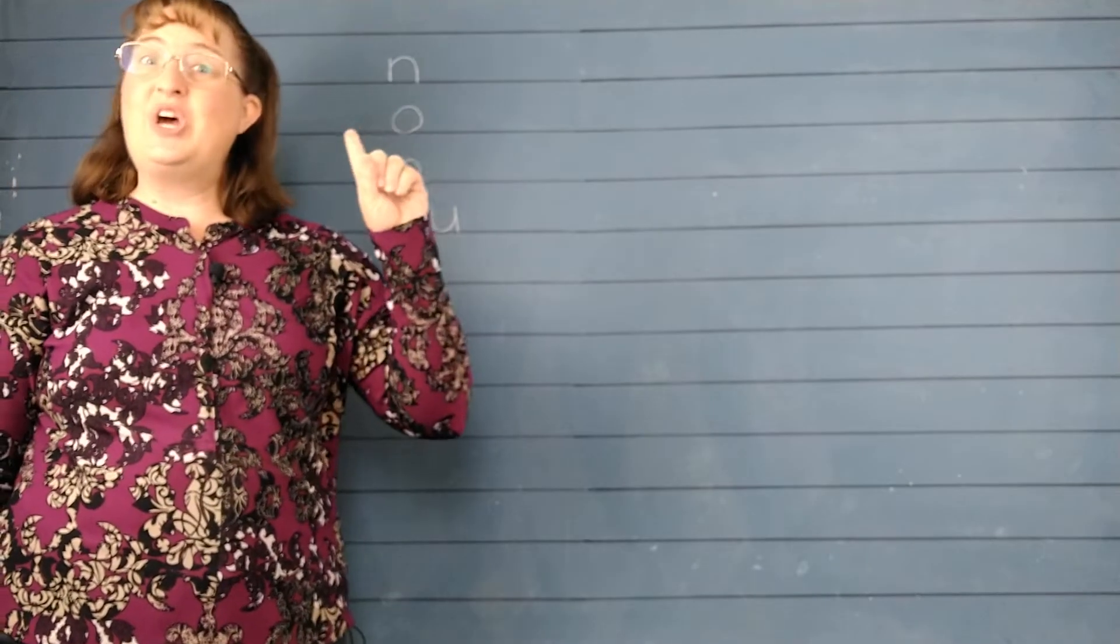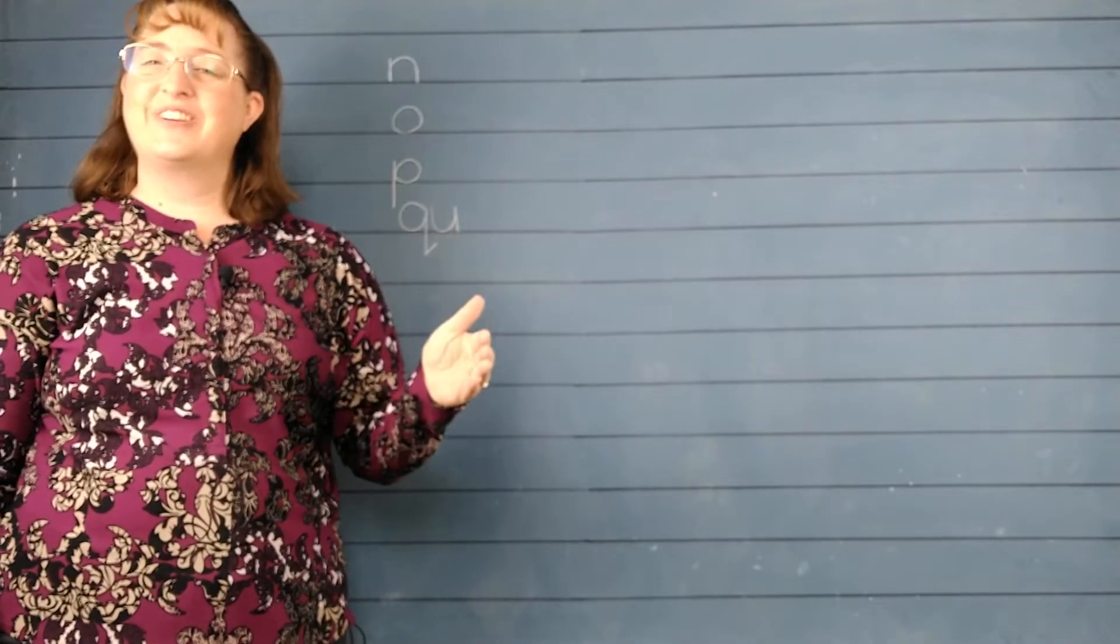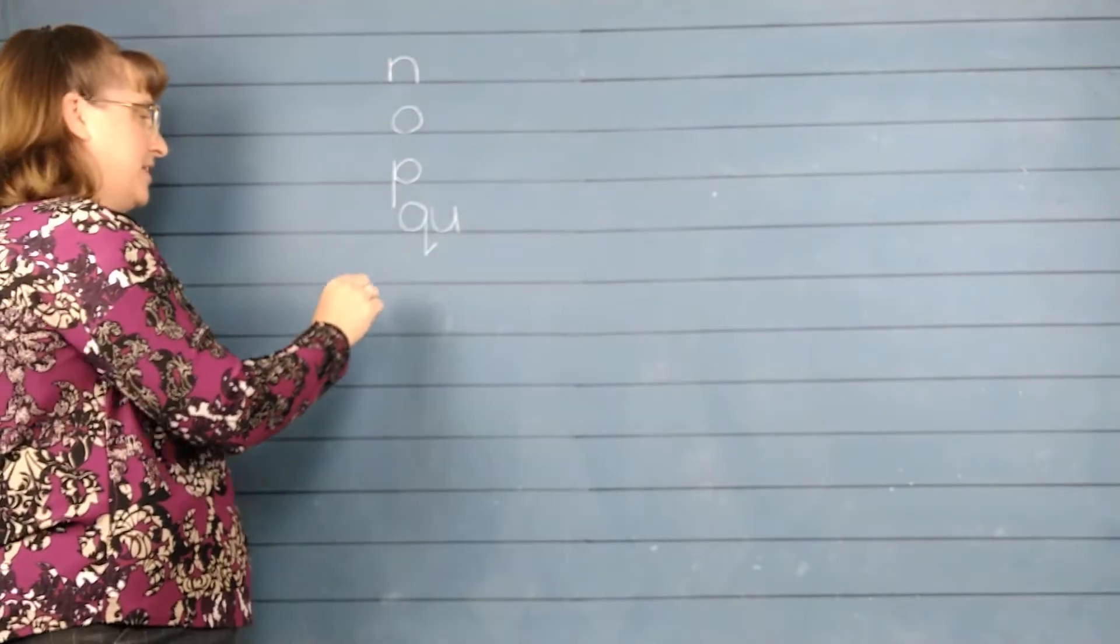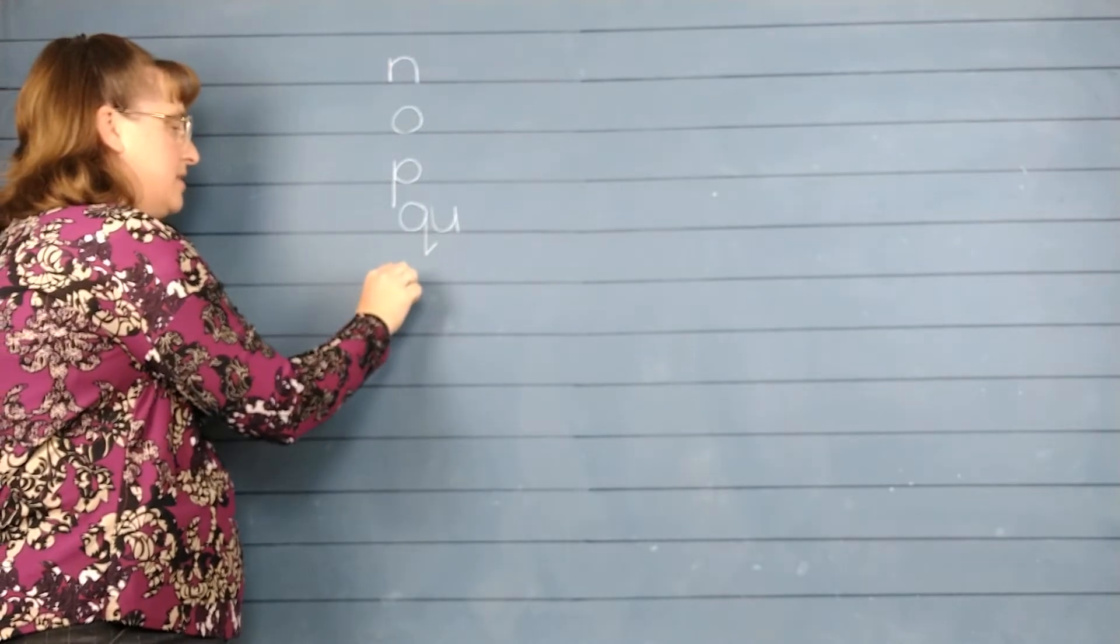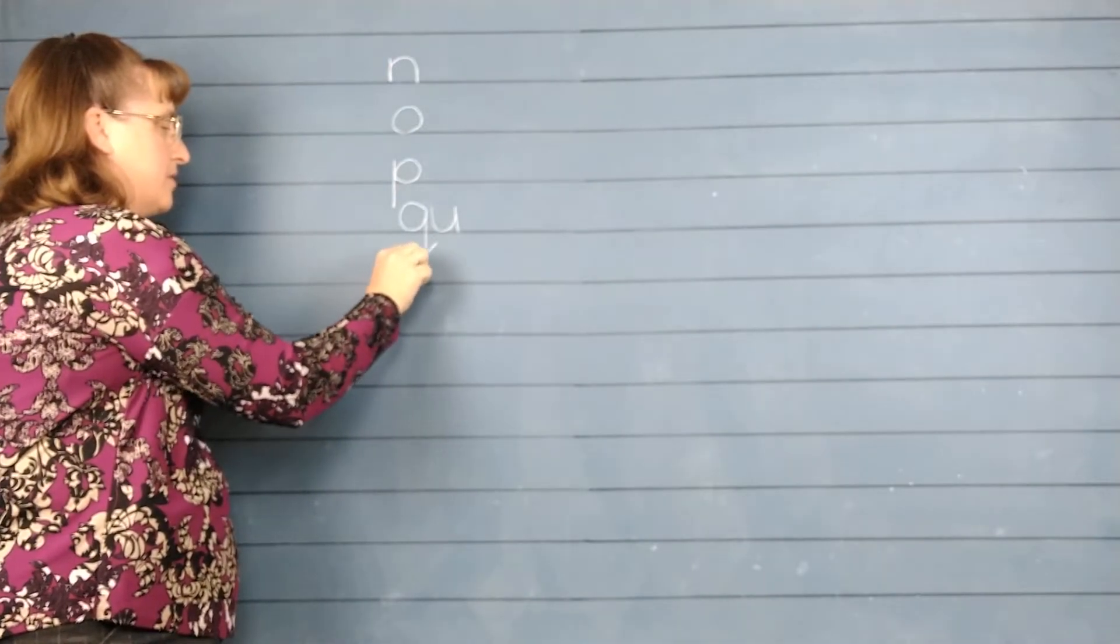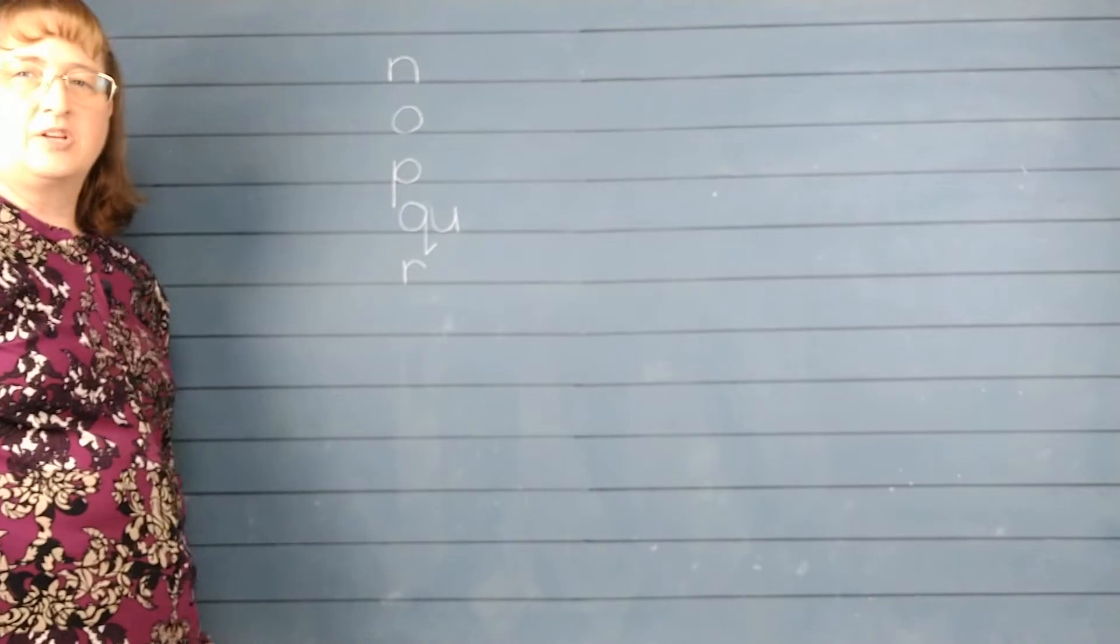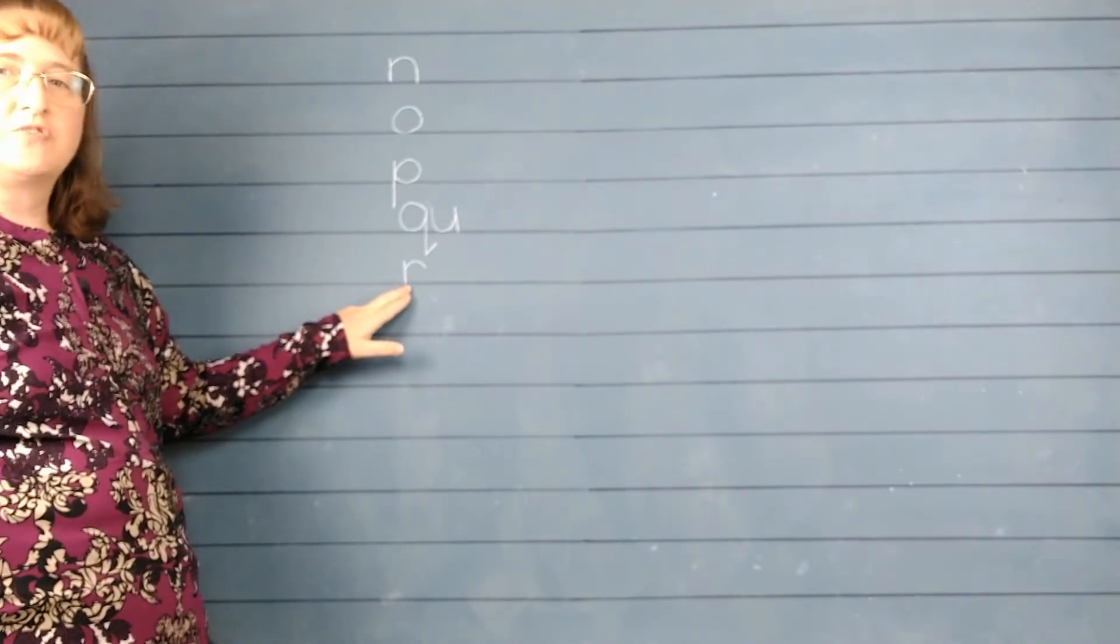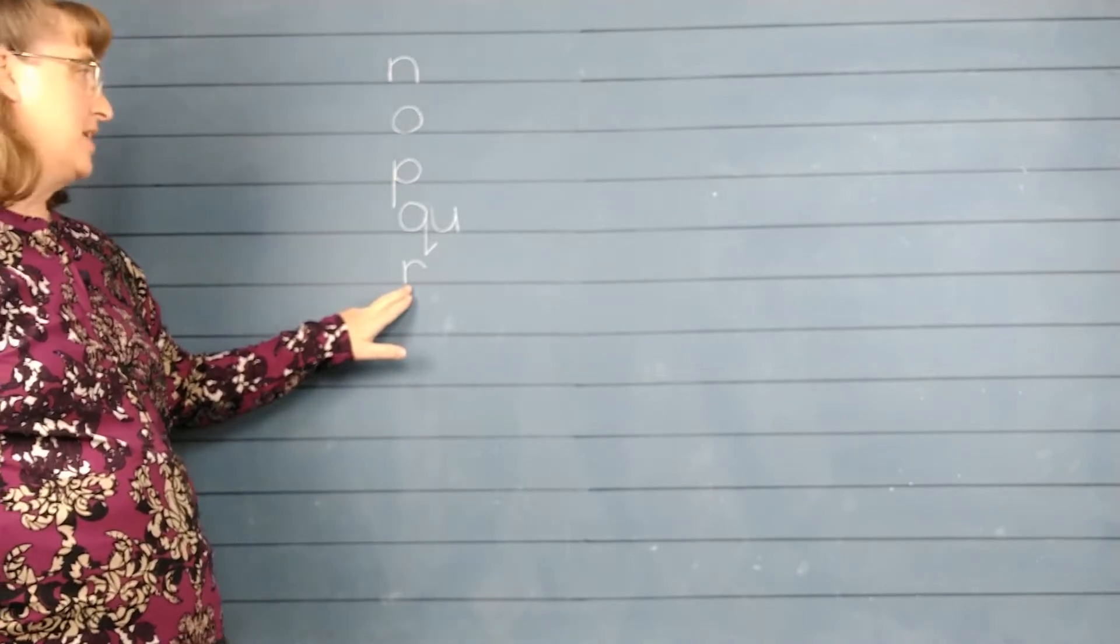Eyes here. Listen. Er. Er. How do we write er? Write it on your paper before me. Er. Are you making all your letters sitting on the baseline? Make sure yours looks just like mine.